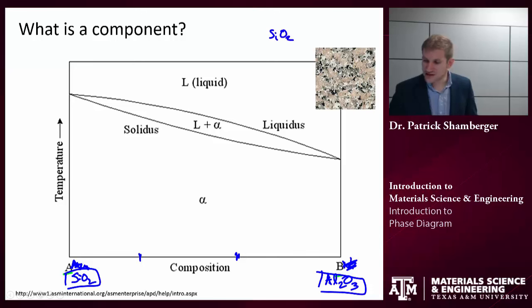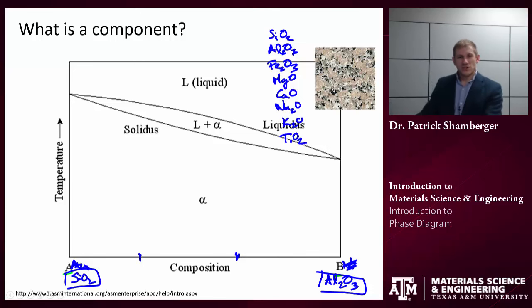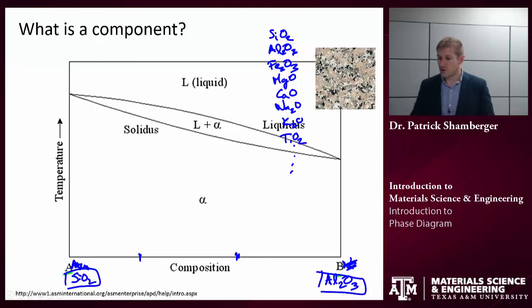In the case of granite, the main components would be SiO2, Al2O3, Fe2O3, MgO, calcium oxide, sodium oxide, potassium oxide, and titanium oxide. Geological systems are very exciting because there are usually many, many components in them. The number of chemical components is quite large, and that's why we end up with a number of different phases in that system.